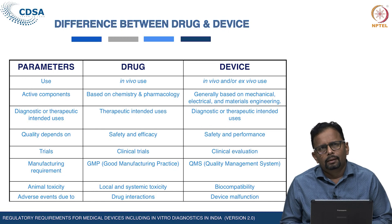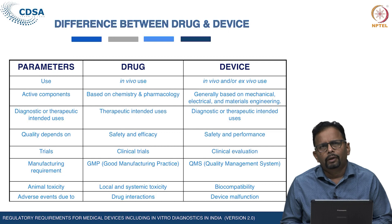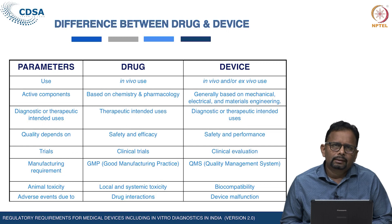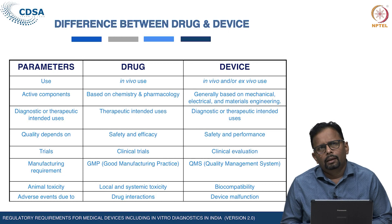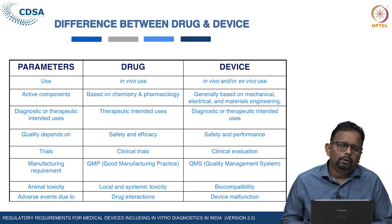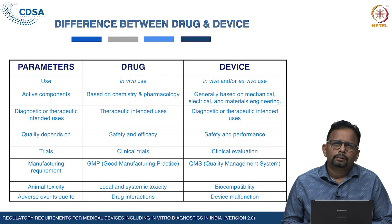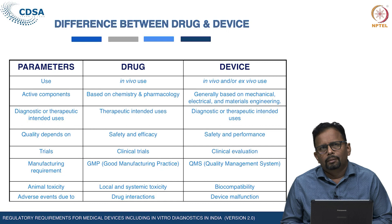There are many differences between drugs and devices. Regarding use: drugs are for in vivo use, whereas devices are used in vivo, ex vivo, or in vitro. The active component of a drug is based on chemistry and pharmacology, while for medical devices it is based on mechanical, electrical, and material engineering. The intended purpose of drugs is therapeutic, while devices serve both therapeutic and diagnostic purposes.